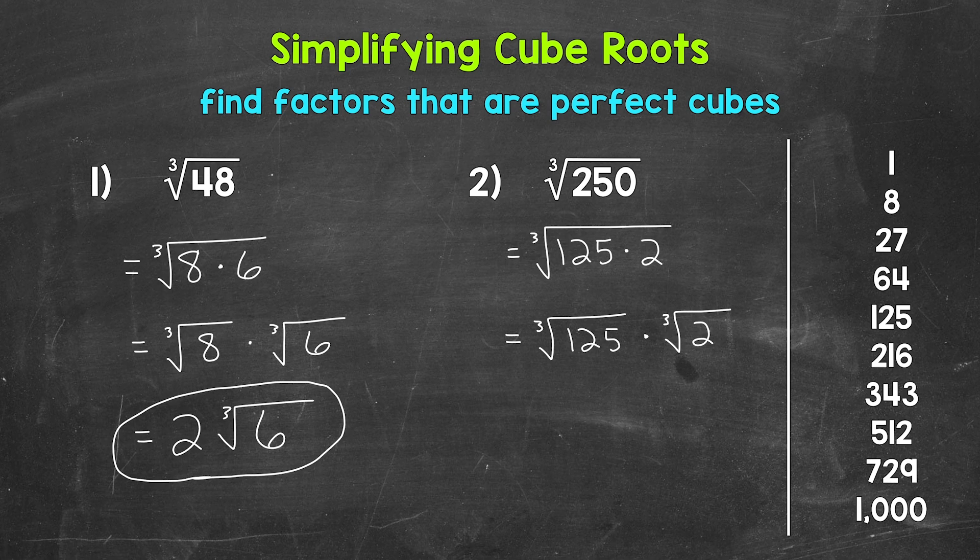Now we can take the cube root of 125, which is 5. 5 times 5 times 5 equals 125. So this is going to equal 5 times the cube root of 2. And that's our final simplified answer.